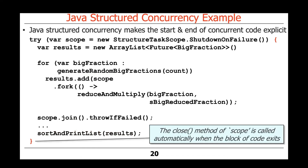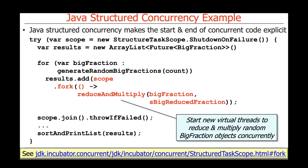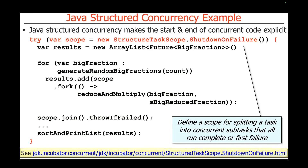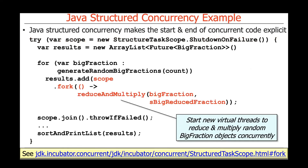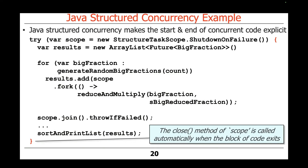The last thing that happens is the close method of this scope is called, freeing up any resources allocated in the context of that scope. This takes advantage of the try-with-resources block, since the shutdown-on-failure instance implements auto-closeable and will clean up resources at that point. That's a very quick example of how you can program with structured concurrency — we'll look at many more examples shortly.